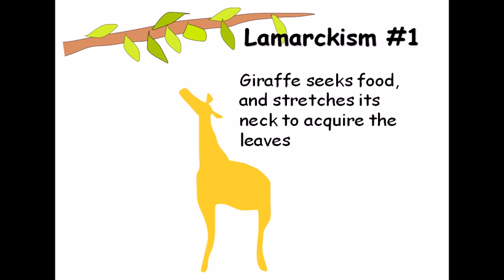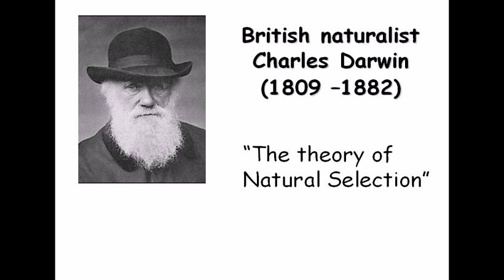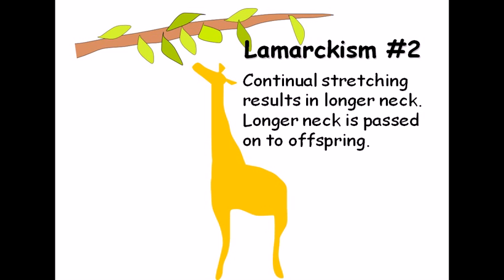According to Lamarck, continuous stretching results in the longer neck of the giraffe, and that longer neck is passed on to the offspring because it was an acquired trait. So after some time, when the organism modifies its own body, that modification or acquired characteristic is passed on to the offspring, and that's how new species are generated.